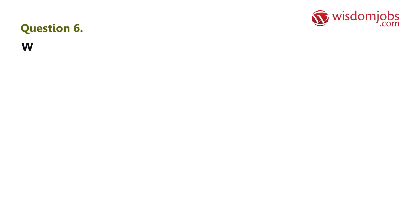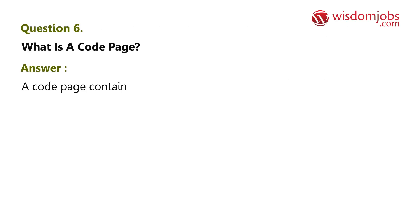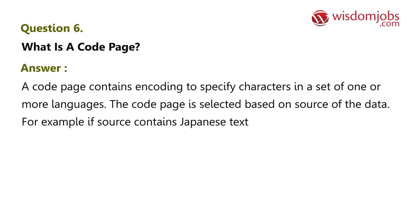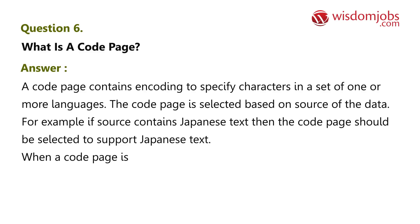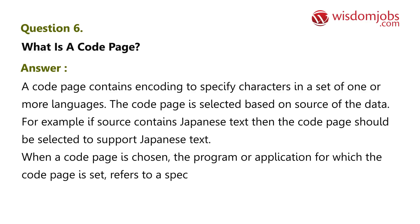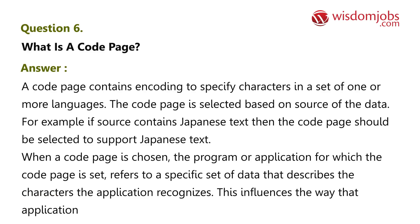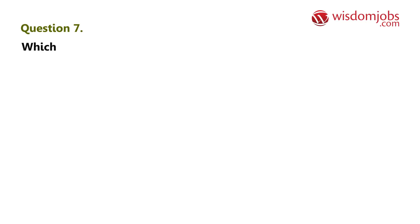Question 6: What is a code page? Answer: A code page contains encoding to specify characters in a set of one or more languages. The code page is selected based on the source of the data. For example, if the source contains Japanese text, then the code page should be selected to support Japanese text. When a code page is chosen, the program or application for which the code page is set refers to a specific set of data that describes the characters the application recognizes. This influences the way that application stores, receives, and sends character data.